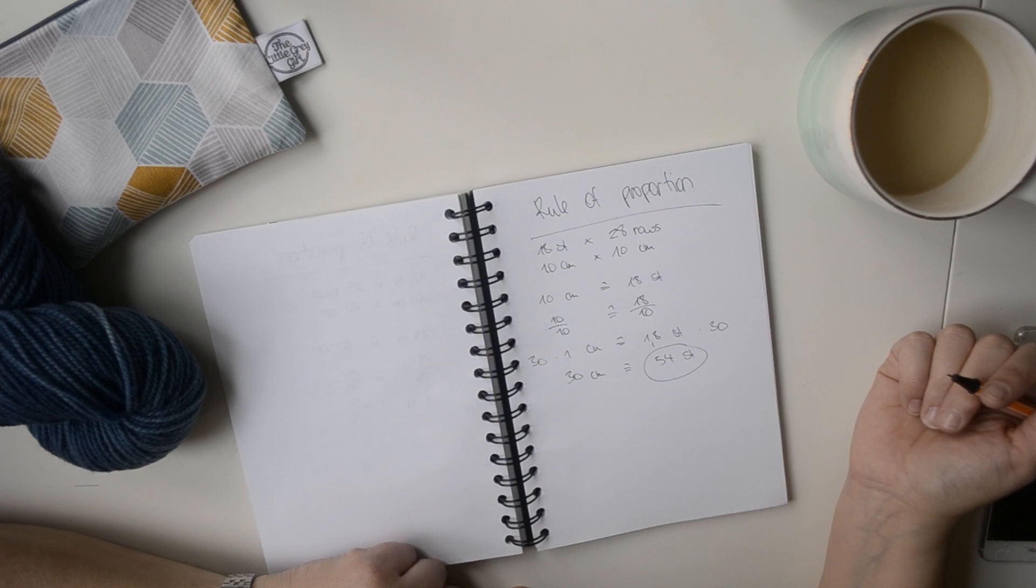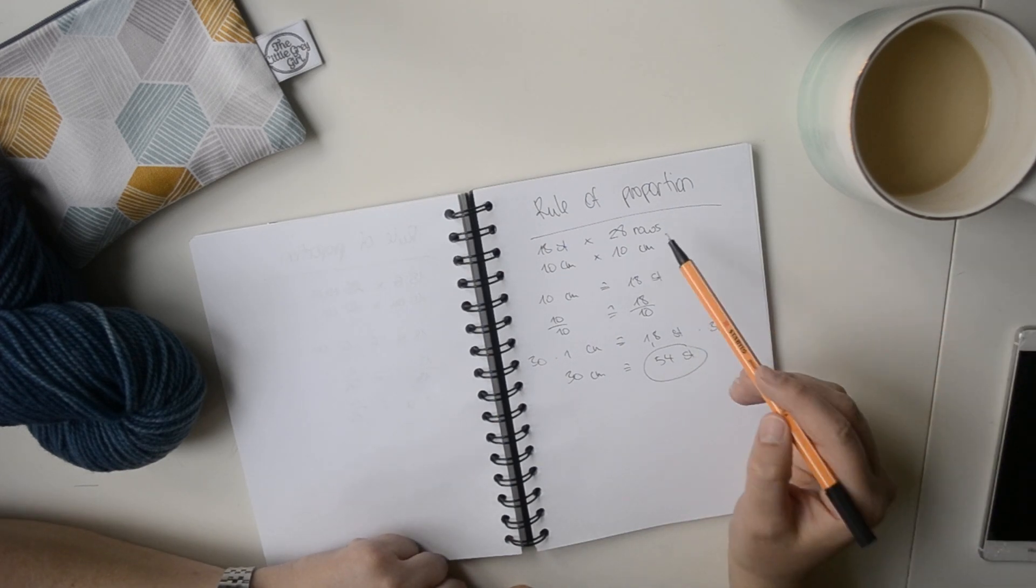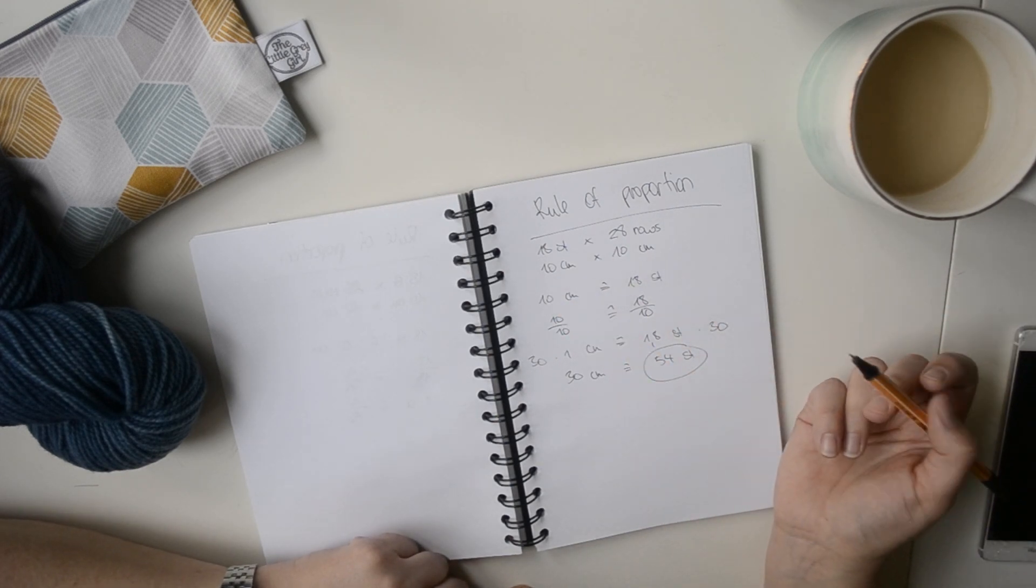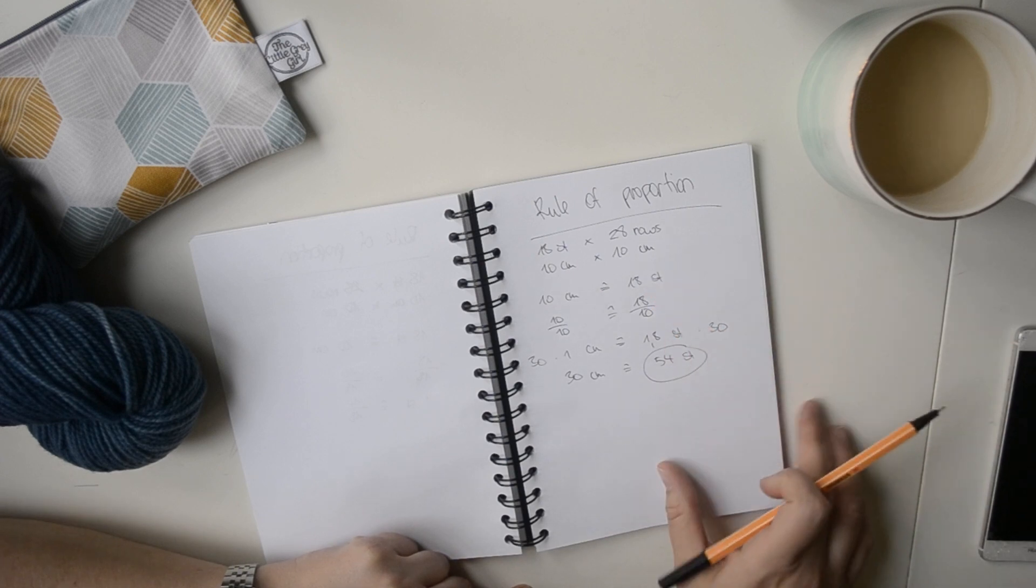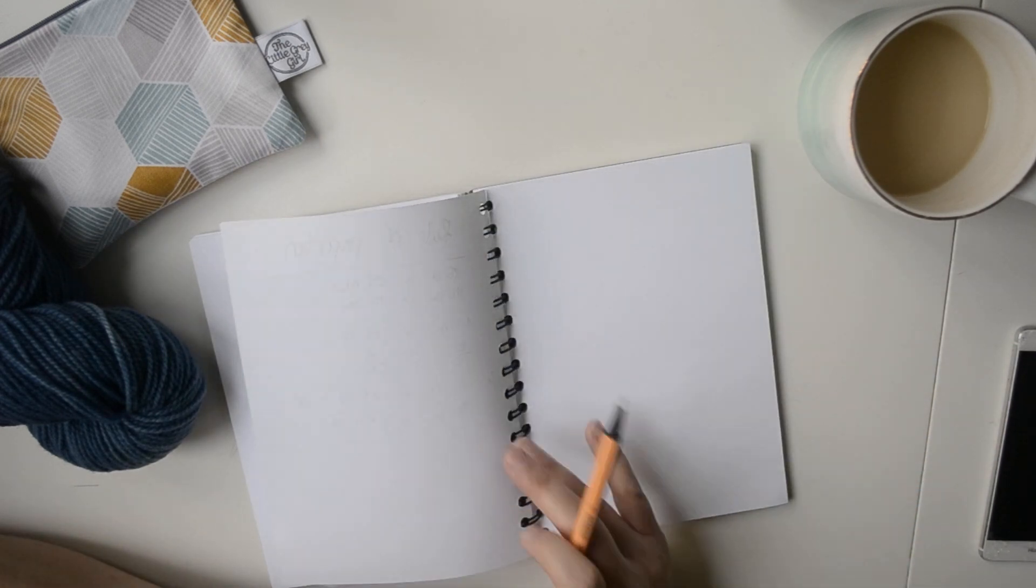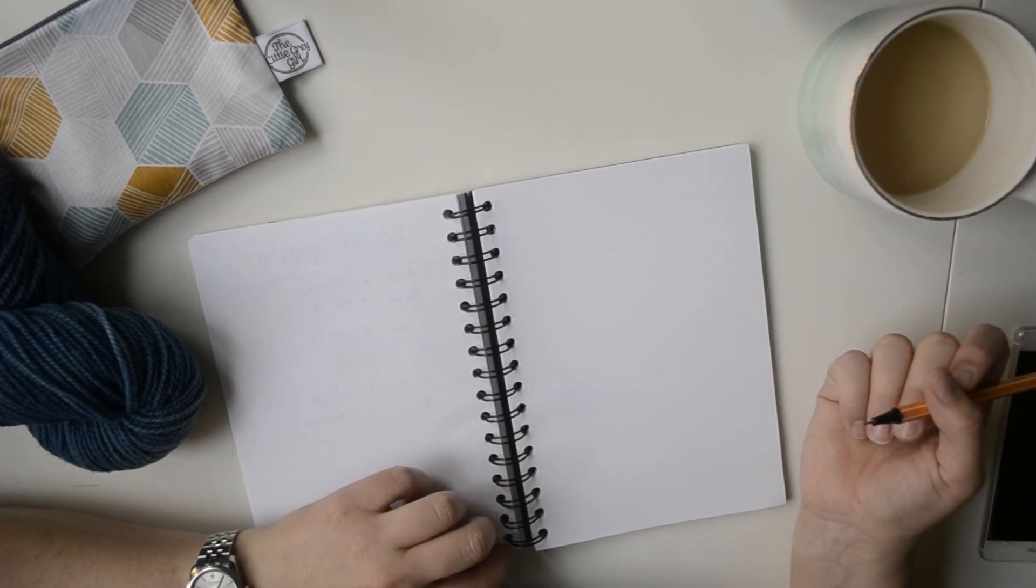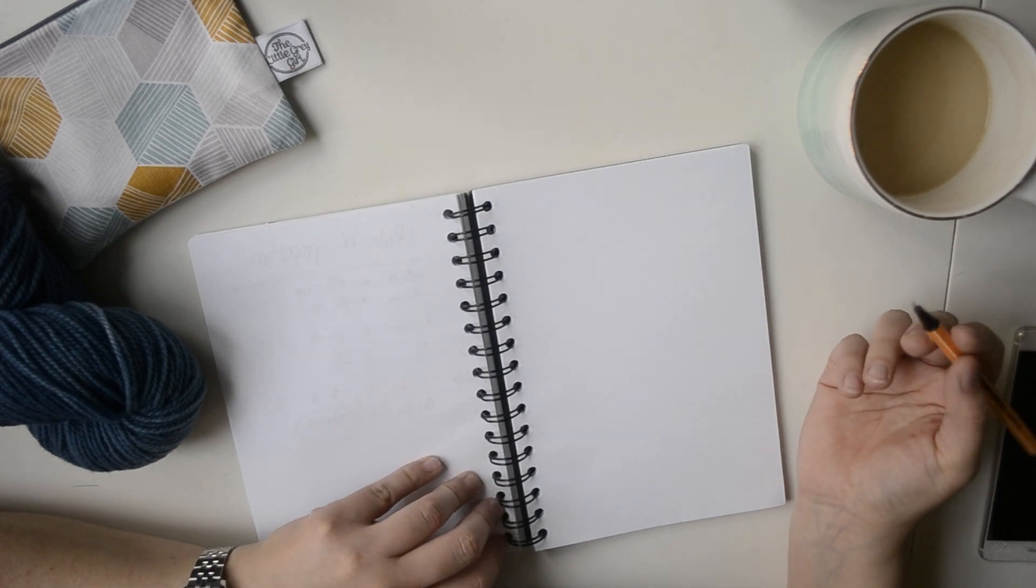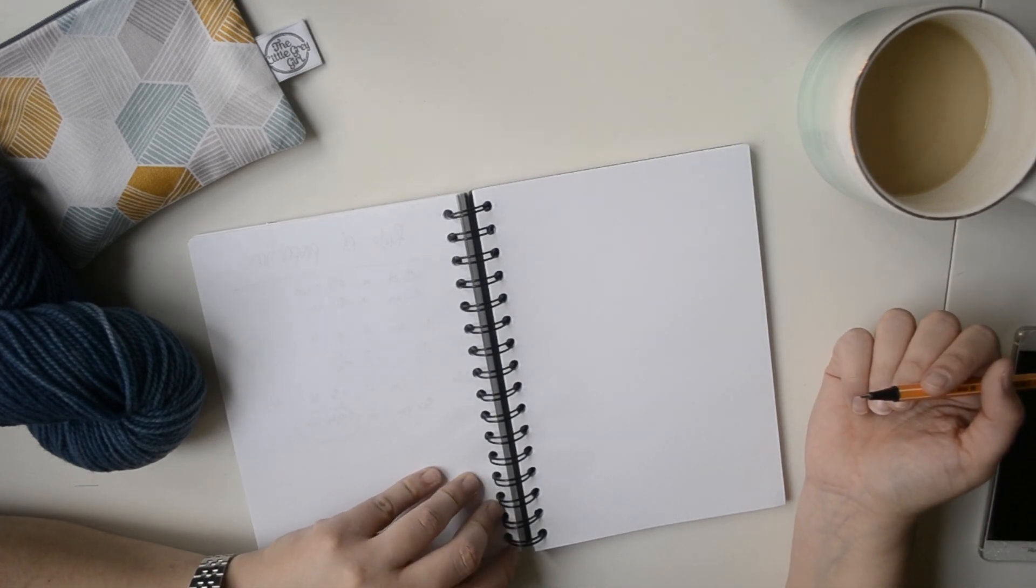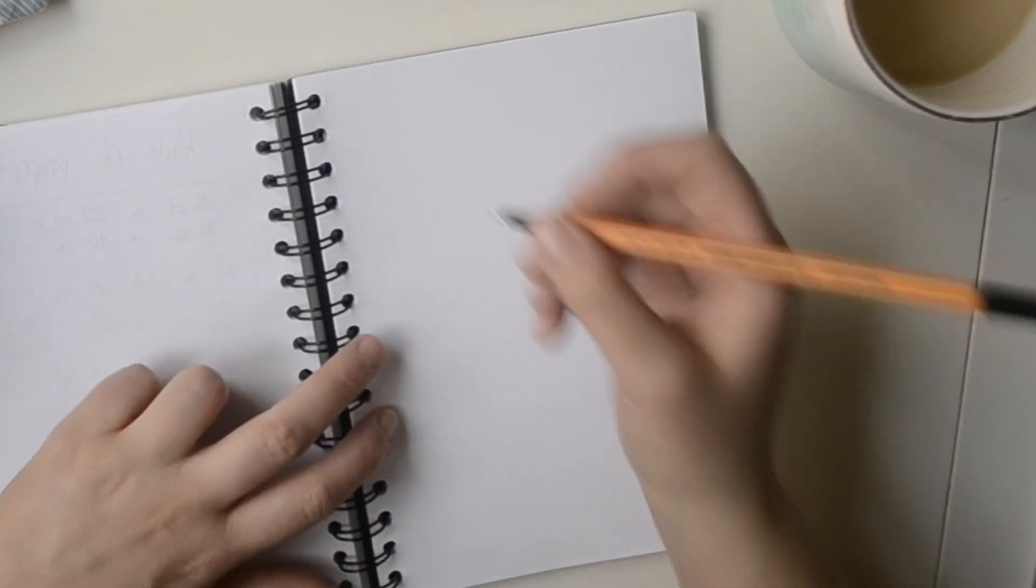You could also use this the other way around. So we are still assuming we are having the same gauge, and now we can use the rows. So, for example, if it says in your pattern that you should knit, let's say, 60 rows.